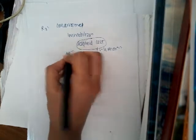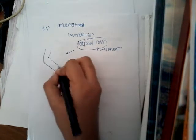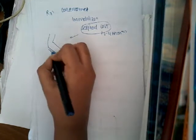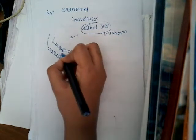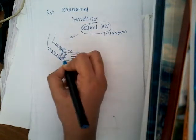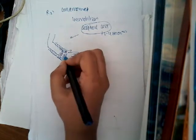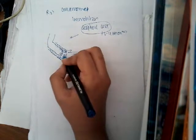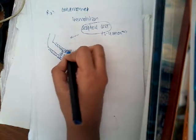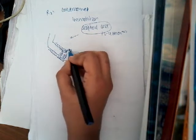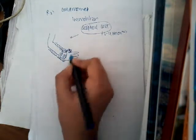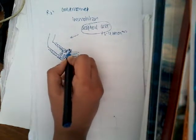What is a scaphoid cast? This cast starts from below the elbow and continues till the heads of the metacarpals. It also includes the thumb, but only up to the interphalangeal joint — not the entire thumb. It does not include the other fingers. This is called the scaphoid cast.